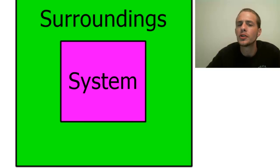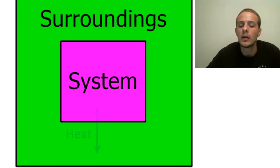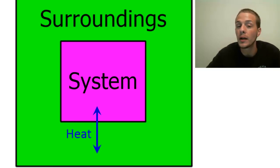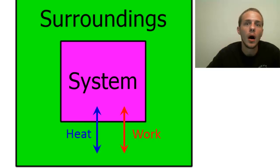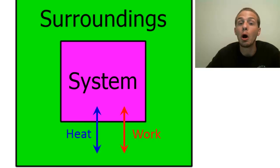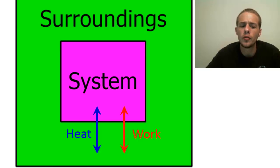The internal energy change is going to be the sum of two terms. It's going to be the heat that's transferred between a system and its surroundings, and it's also going to be the work that is done either on the system or by the system on the surroundings. Those are the two ways by which energy can flow between a system and its surroundings, and we've already talked about how to calculate both heat and work.